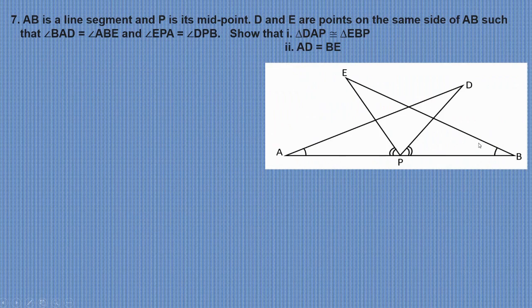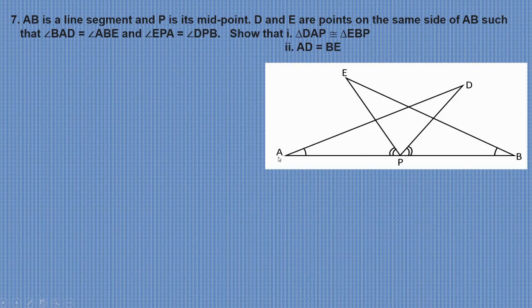Moving on to the seventh question. AB is a line segment and P is its midpoint. D and E are points on the same side of AB such that angle BAD equals angle ABE and angle EPA equals angle DPB. We need to show that triangle DAP is congruent to triangle EBP, and also that AD equals BE.